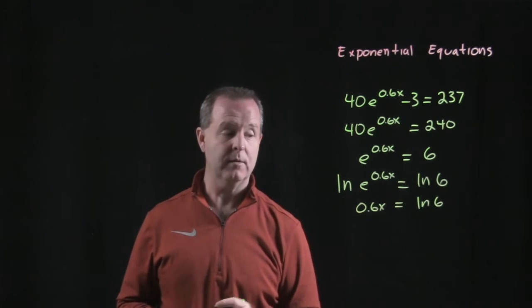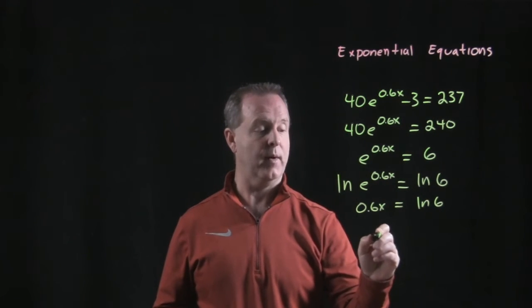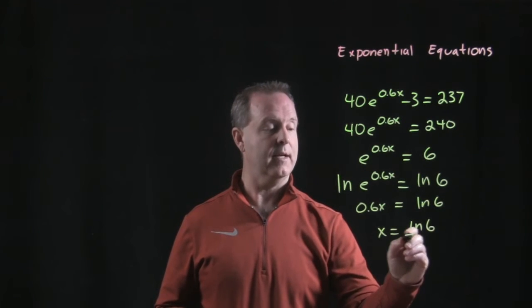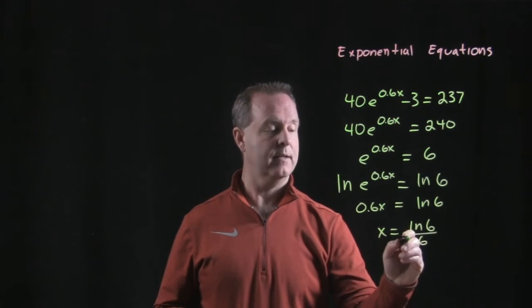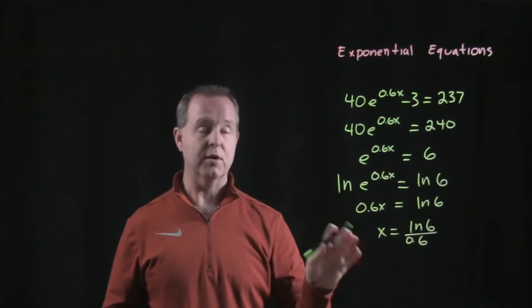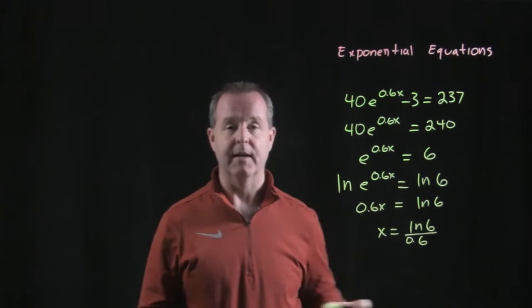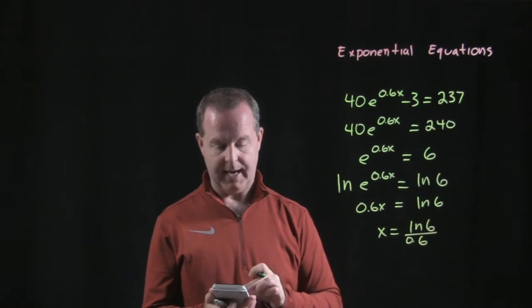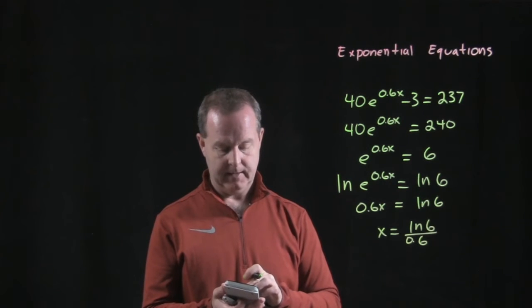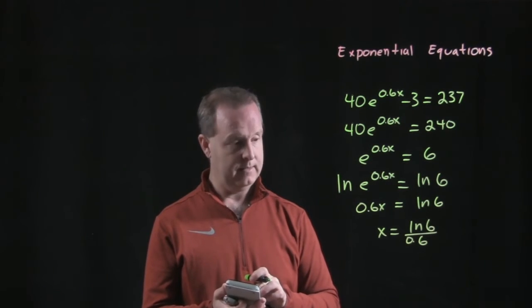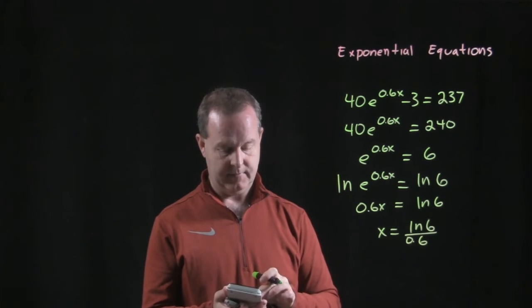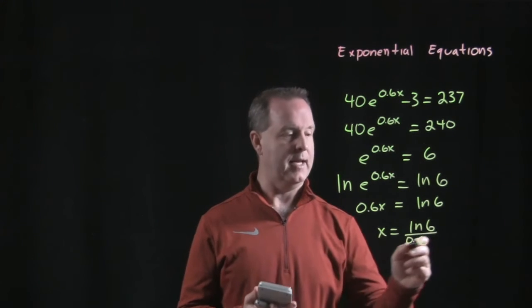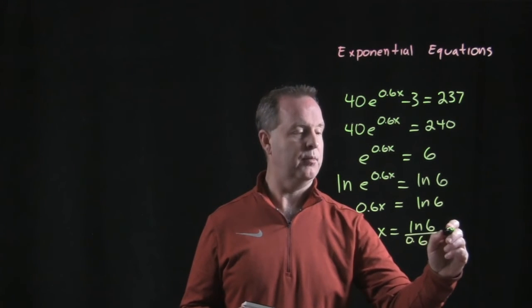Isolate the variable — divide both sides by 0.6. So I have the natural log of 6 divided by 0.6. There's my exact answer. If I want an approximation, something that was useful, log of 6 divided by 0.6 equals approximately 2.97.